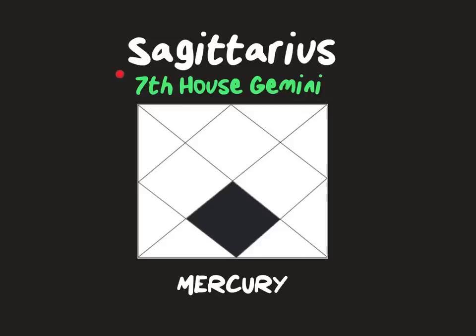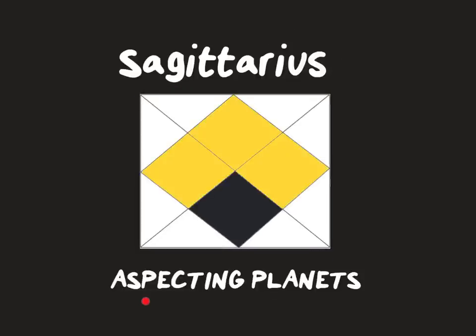If you are Sagittarius ascendant, the 7th house Gemini is Baddaka. Any planets in Gemini become Baddaka for you. Mercury in your chart becomes Baddakaisha — where has Mercury gone? That house gets a Baddaka effect. Any planets in conjunction to Mercury also have a Baddaka factor. Aspecting planets to your 7th house Gemini come from Sagittarius 1st house, 4th house Pisces, and 10th house Virgo. They will also bring a Baddaka influence.